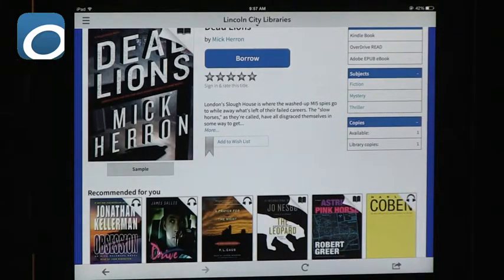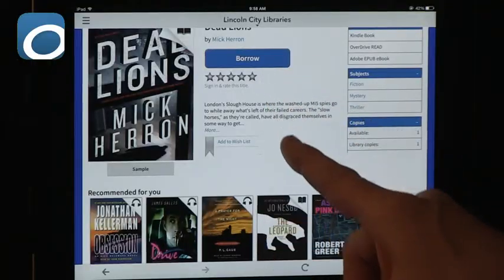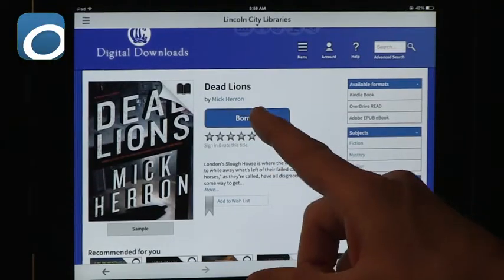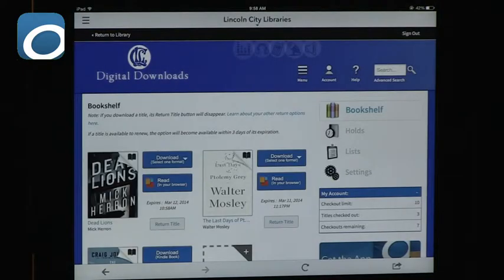You can see that there are multiple options. You can download it straight into Kindle. So if you're a Kindle user and you want to download it into your Kindle app, you can from here. You will need to know your Kindle password. You can do an OverDrive read, and I'll show you in a second what it looks like. And you can do an Adobe e-publication e-book. All of these are available, not for all books. So you have to know what you're looking for. And if you want to start reading, you just press on Borrow.